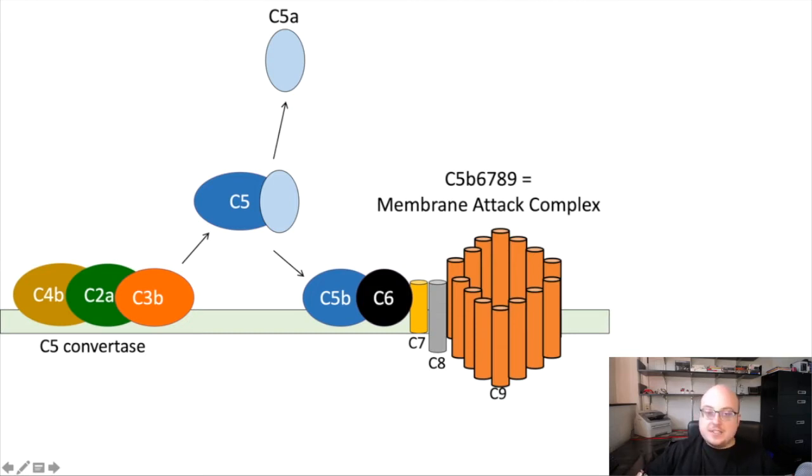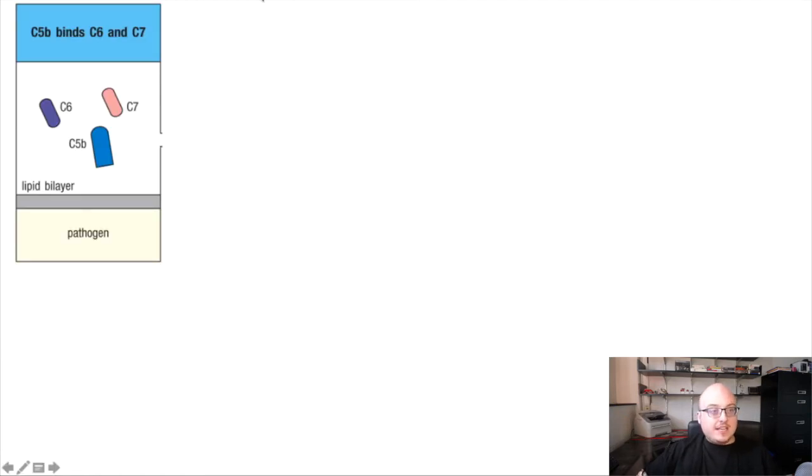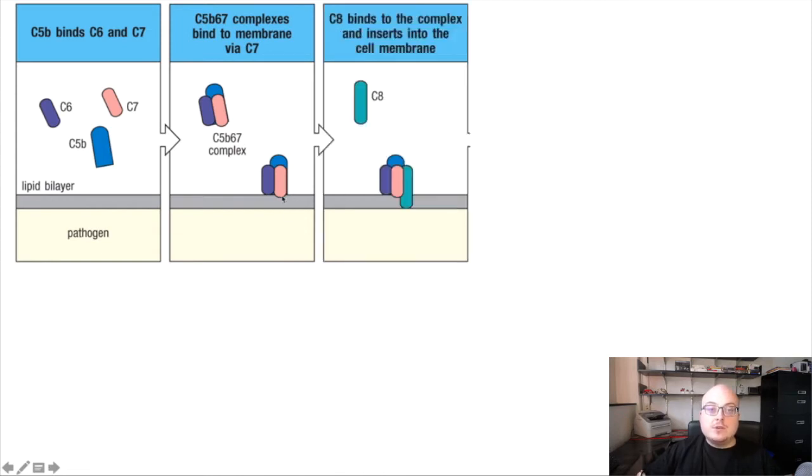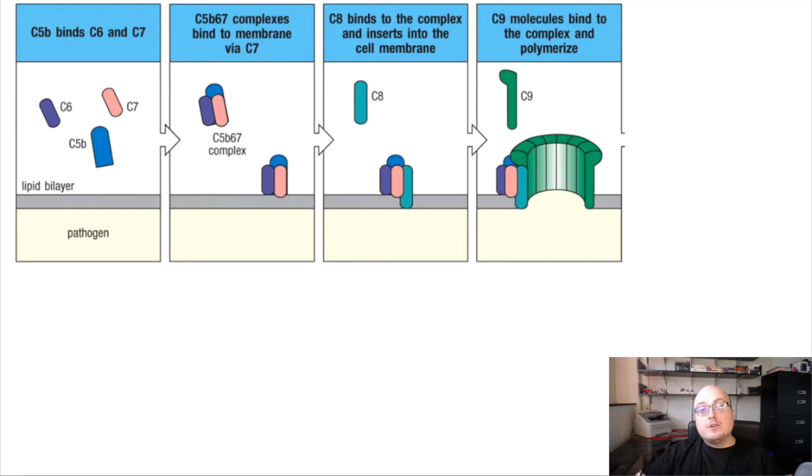So let's go back to your textbook figure just to kind of look at this again. C5B, as I said, binds C6 and C7. And that's kind of floating around for now. But when C7 is recruited into the complex, it attaches to the plasma membrane. C7 is going to recruit C8, which inserts itself and kind of anchors to the membrane.